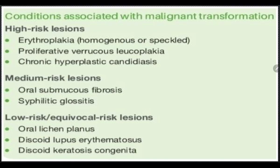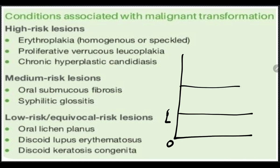First is the premalignant lesion. We basically classify this premalignant lesion as high risk, medium risk, and low risk or equivocal risk. To make it really more simpler, let us draw it in a graph. So in a graph, here will be the zero, this is low, medium, and high risk.